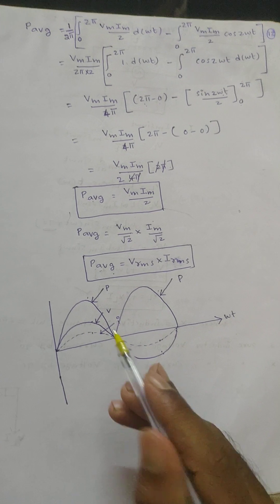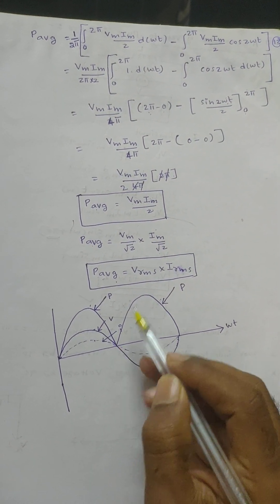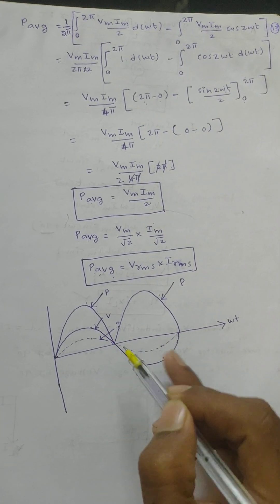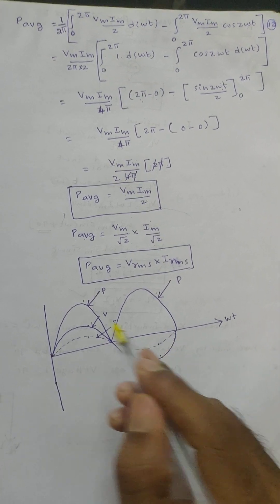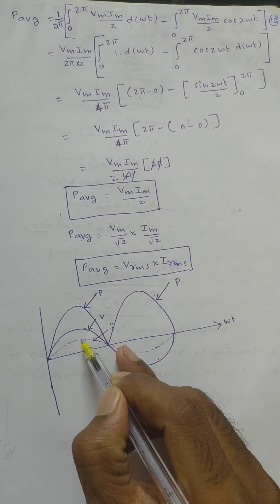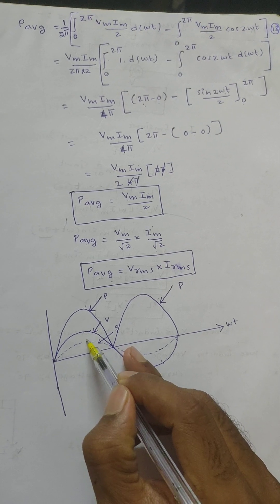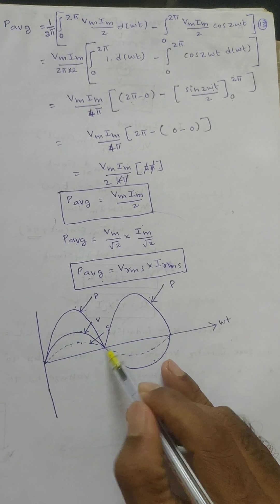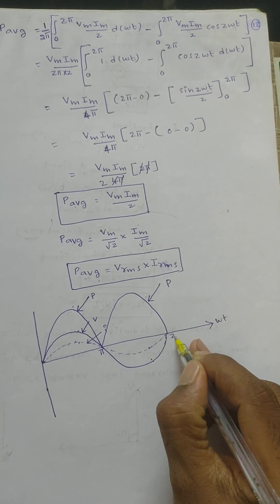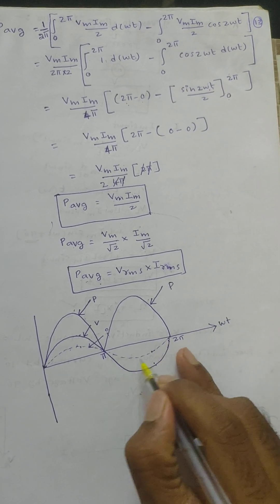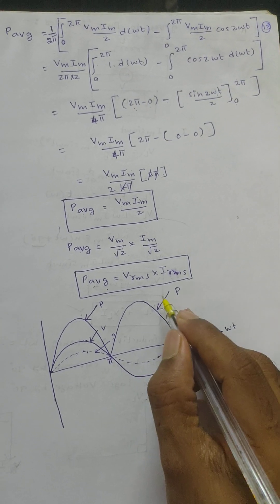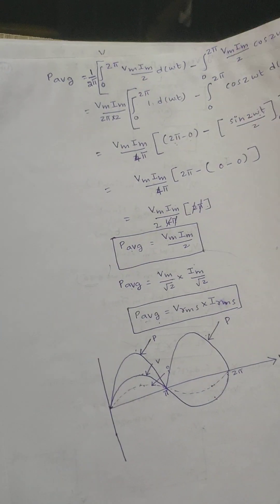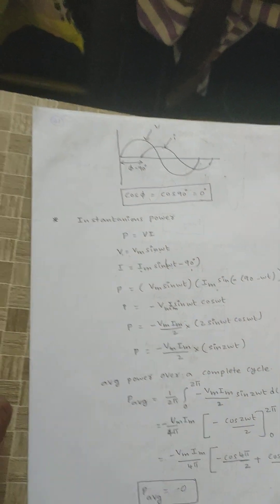If we draw the power waveform: in case of a resistor, voltage and current are both in phase. From 0 to π, voltage is positive and current is positive, so power is positive. From π to 2π, voltage is negative and current is negative — minus times minus gives plus — so power is again positive. Power is always positive in a pure resistor.